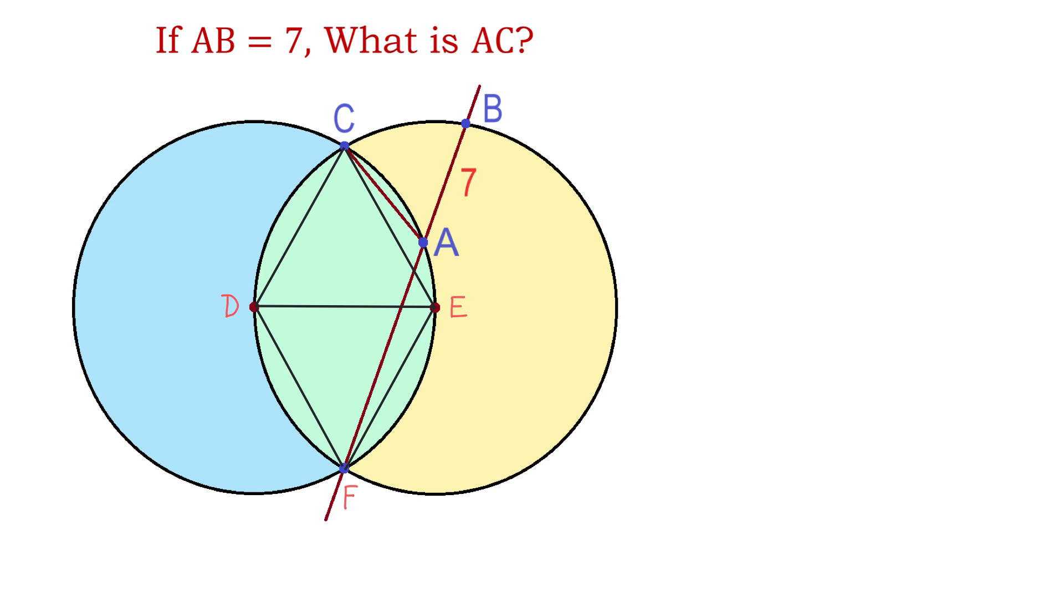So, because all these line segments are equal, we can say that we have two equilateral triangles. And this means that each of these angles is a 60-degree angle.